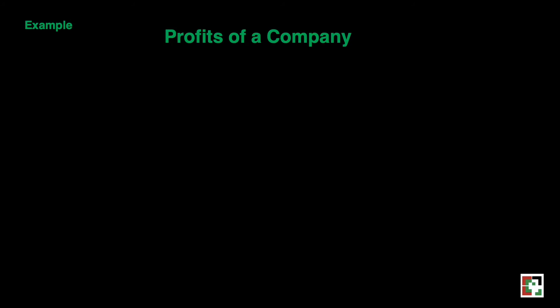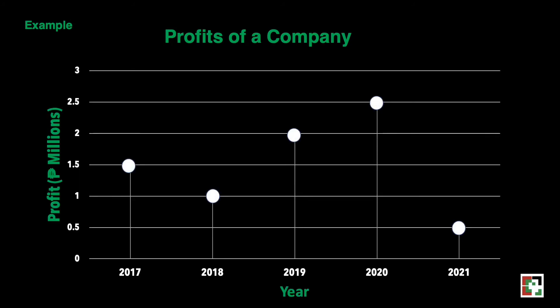We'll have another example. We have here the profits of the company. From the graph, we can see the changes of the company's profit from 2017 to 2021. Based on the line graph, we can conclude the following: the company's profit is continuously increasing from 2018 until 2020. The company earned the least in 2021. The total profit of the company from 2017 to 2021 is 7.5 million pesos. And lastly, the highest profit of the company was recorded in 2020.